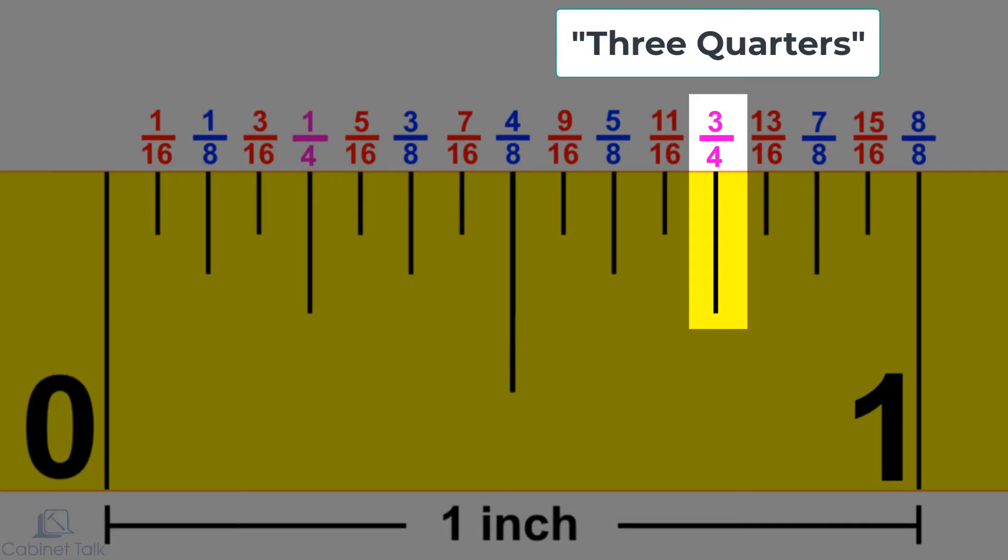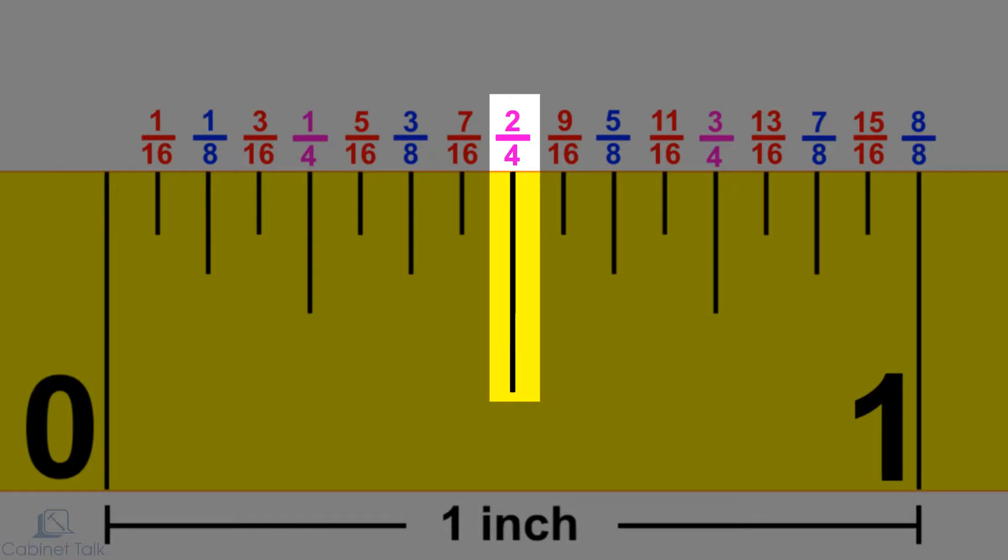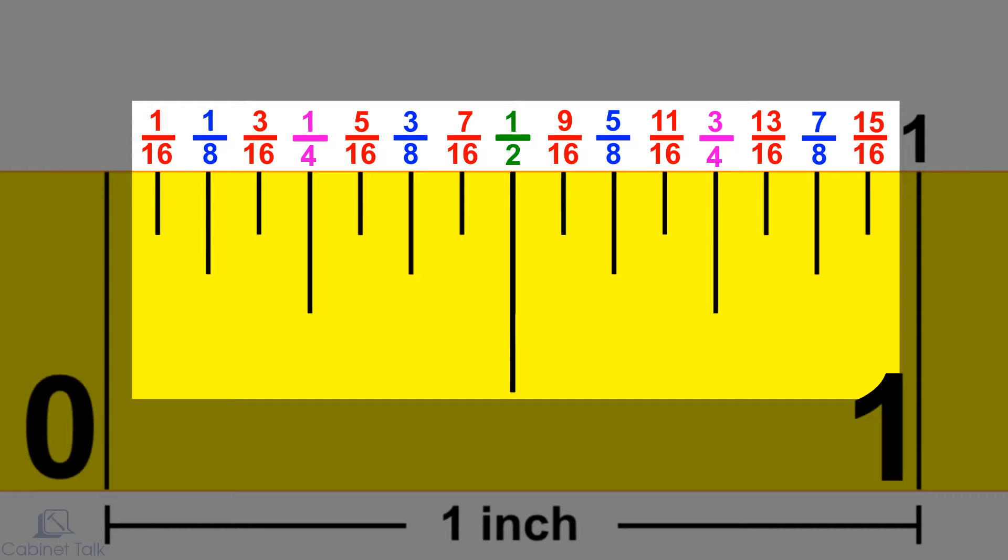Four eighths can be simplified to two fourths, two fourths can be simplified to one half, and eight eighths equals one inch. There's no way to simplify the fractions further, so we're done labeling each of the markings.